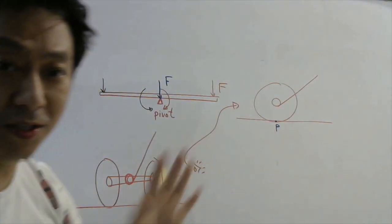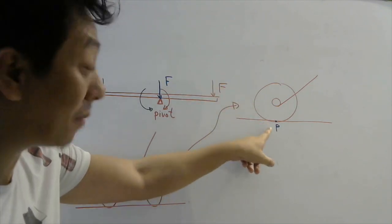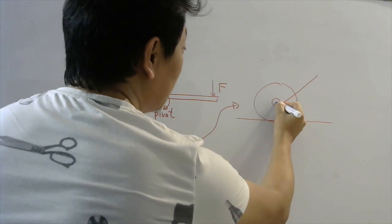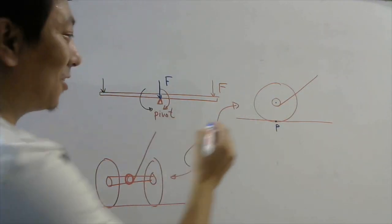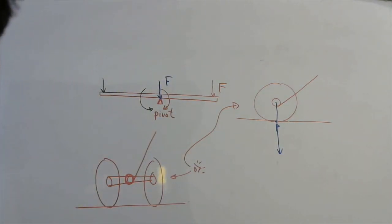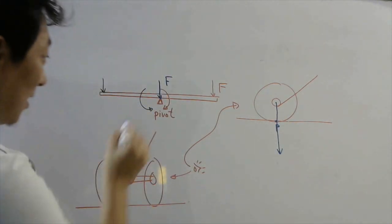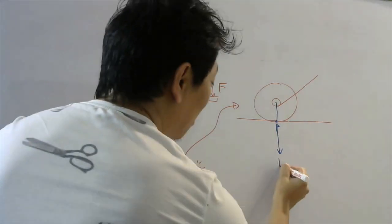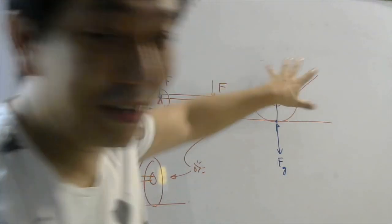The first force is the gravitational force, which always acts through the center of mass. You can see the force of gravity is passing through the contact point — similar to the see-saw case where the force acts at the pivot — and therefore the force of gravity will not be able to rotate the dumbbell about this point.